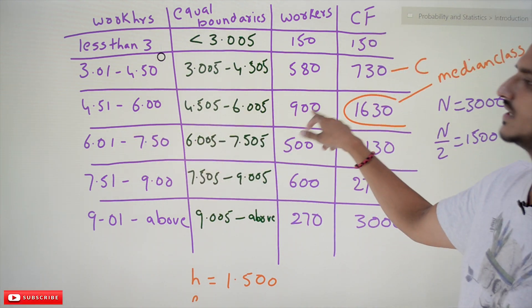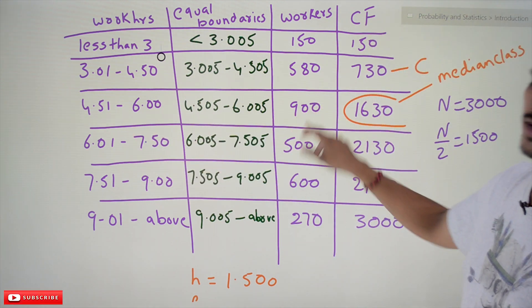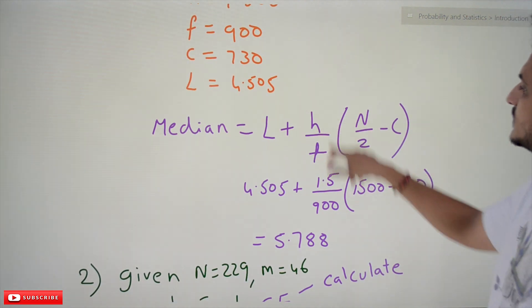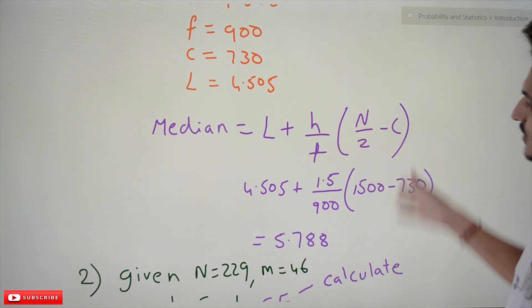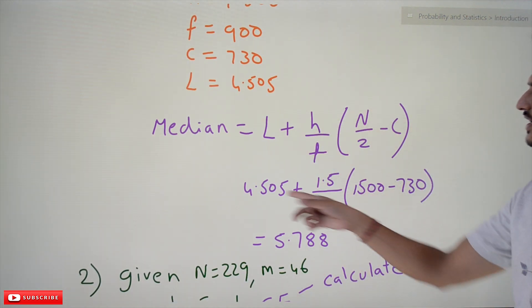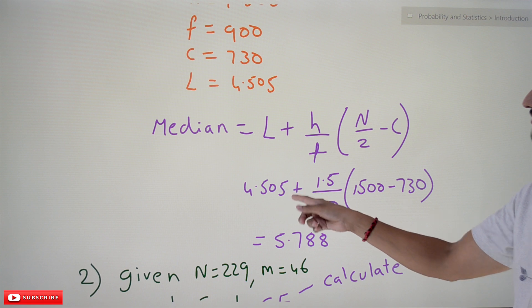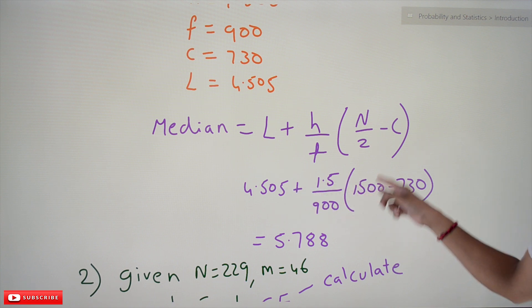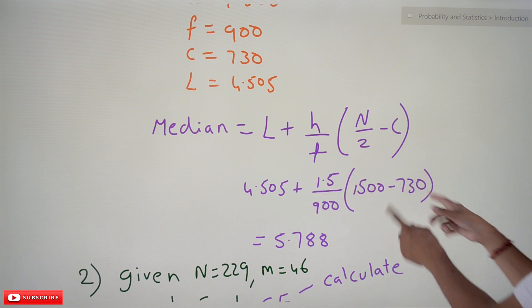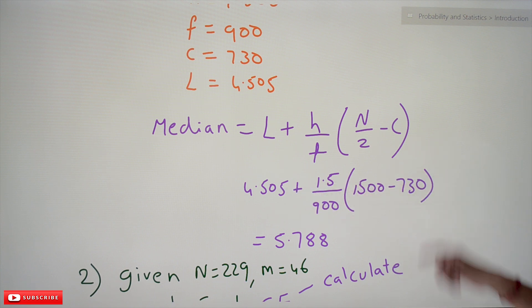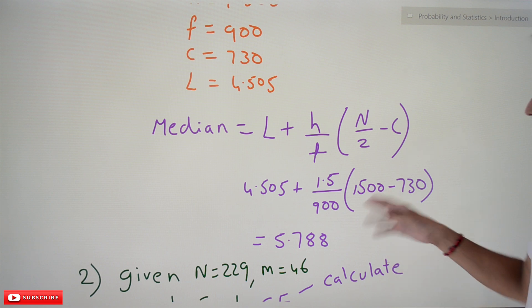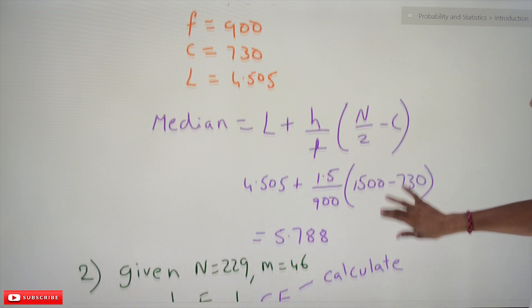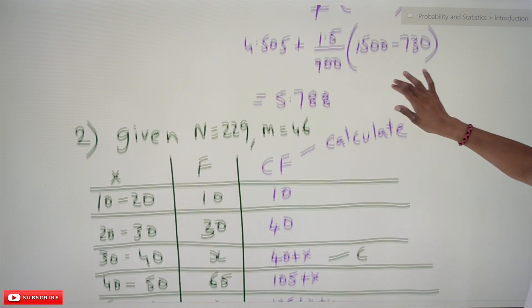The frequency of the median class is 900. The equation is: Median = L + (H / F) × (N/2 − C). The median class range is 4.51 to 6.0, so L = 4.505 and H = 1.500. Substituting: 4.505 + (1.5 / 900) × (1500 − 730). This is how we calculate the median for a continuous distribution.